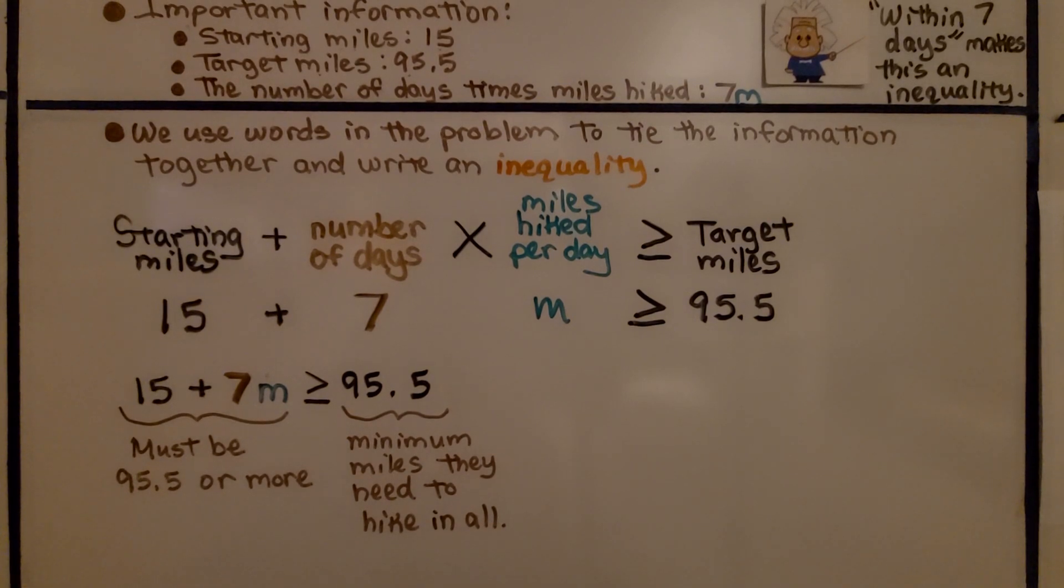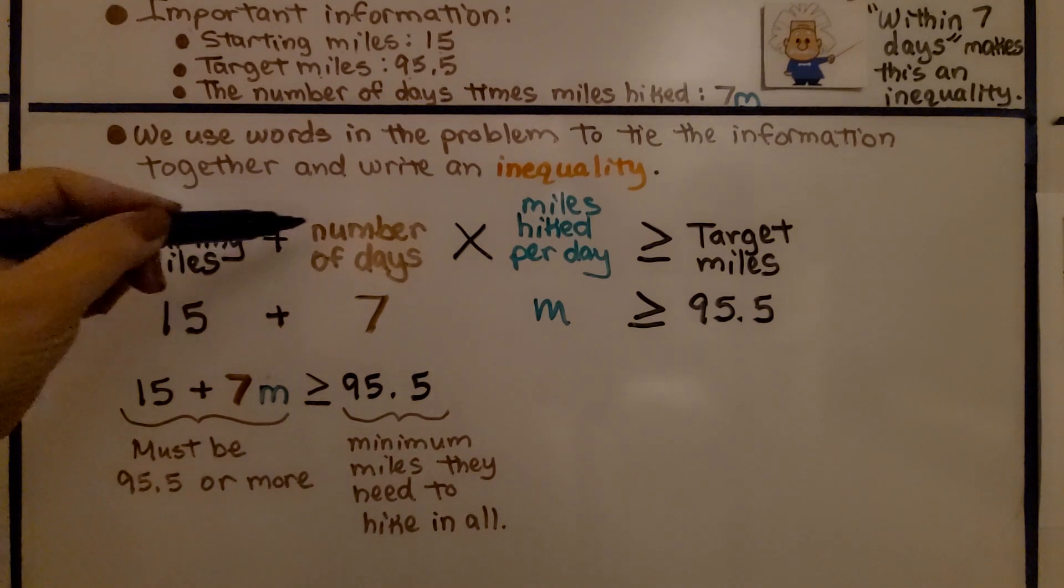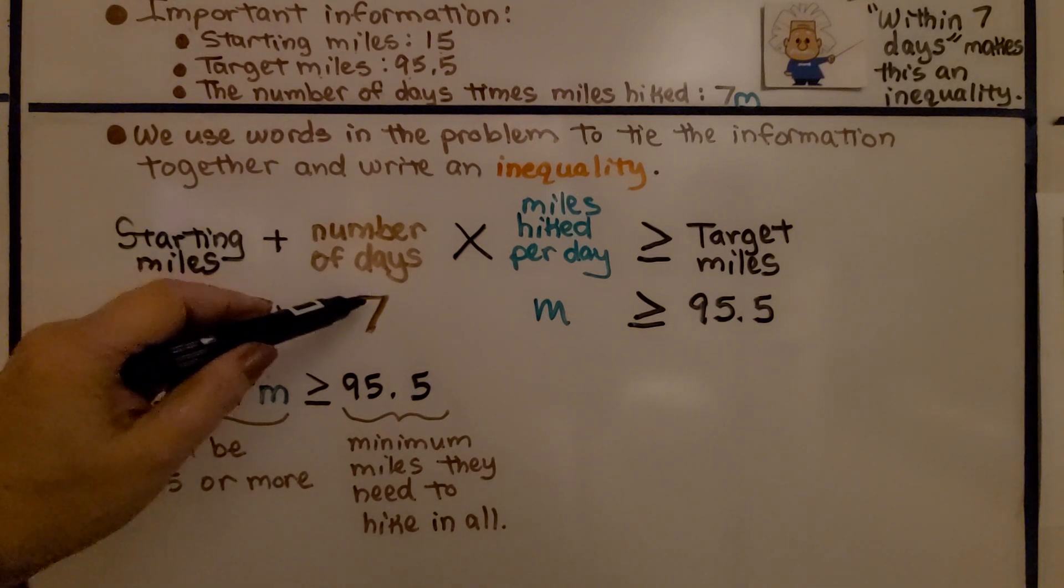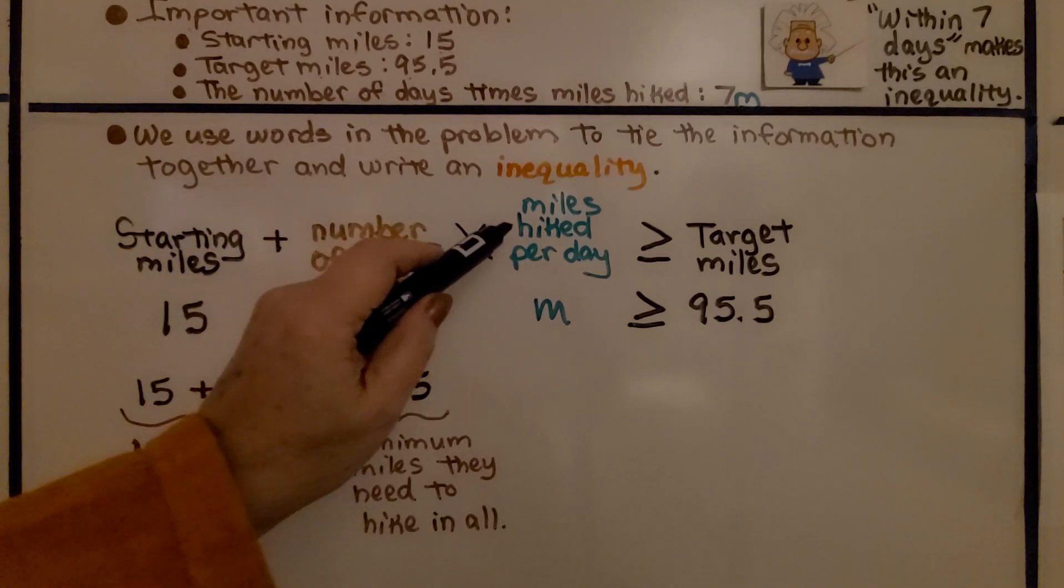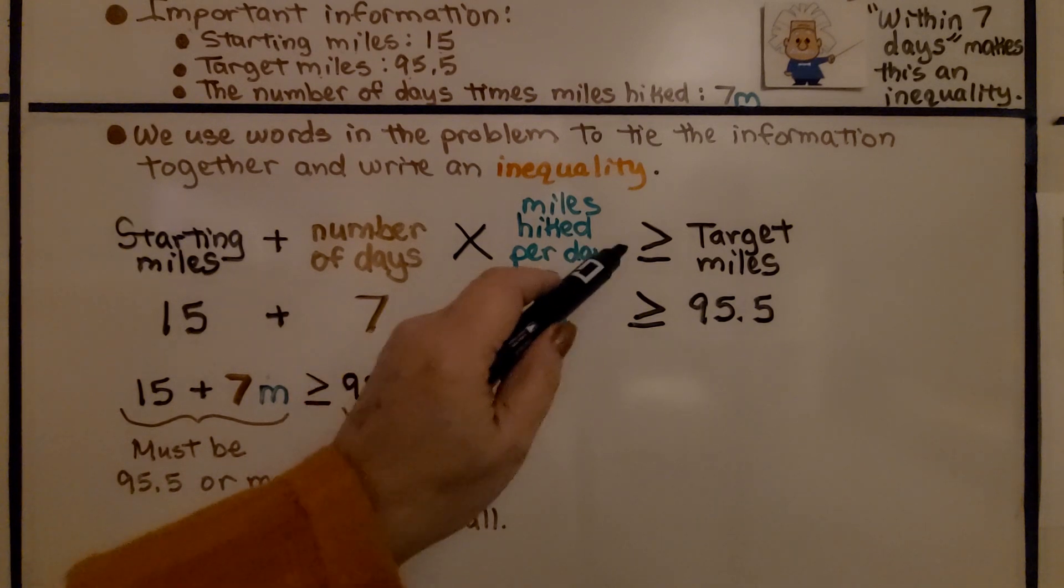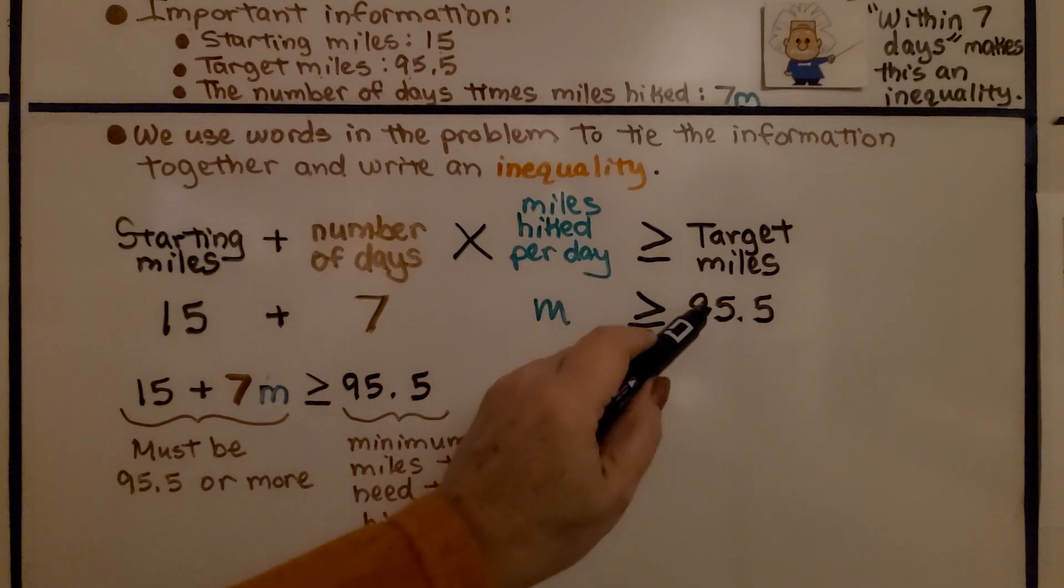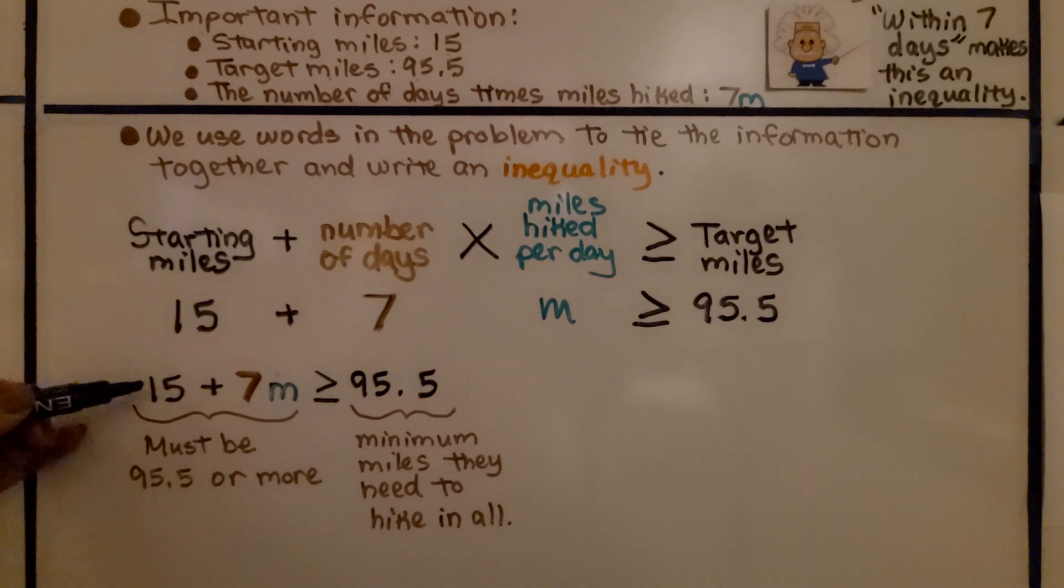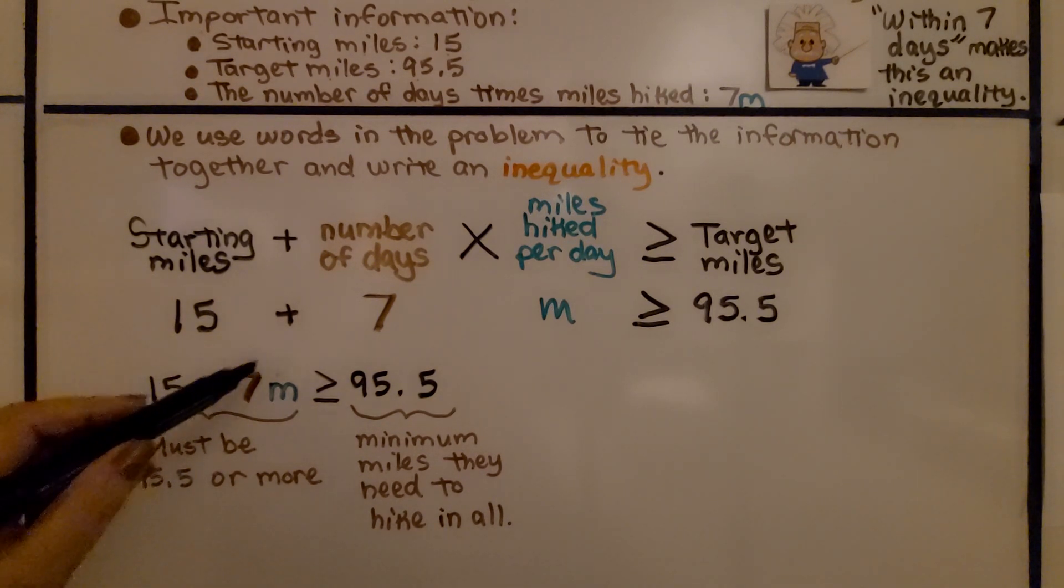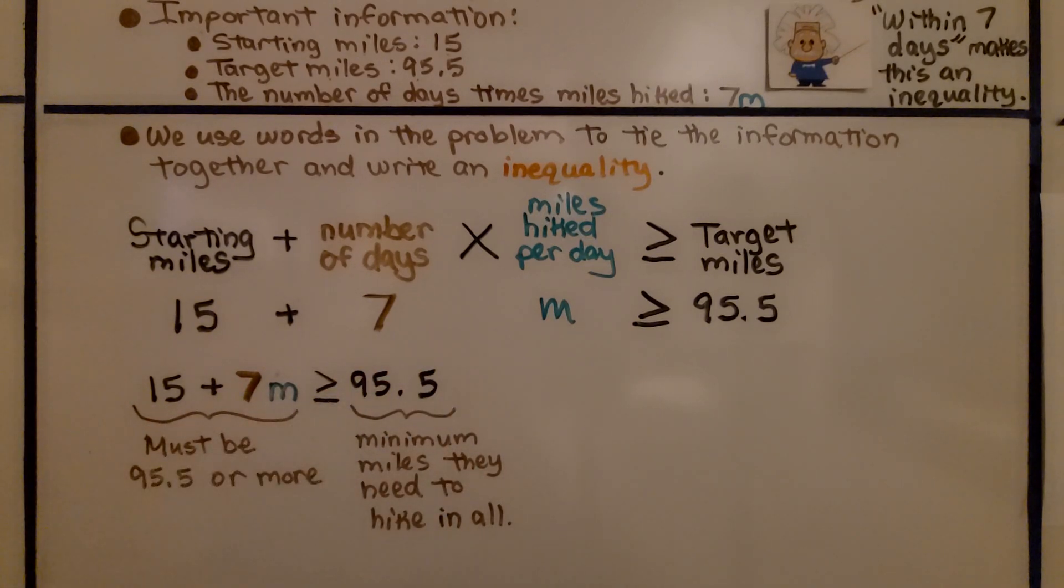We use the words in the problem to tie the information together and write an inequality. The starting miles is 15, because that's where they camped, plus the number of days, seven, that they want to complete the rest of the journey in, the hike. And that's going to be multiplied by the miles hiked per day, M. And it can be greater or equal to the target miles of 95 and 5 tenths. Our inequality is 15 plus seven for the seven days, M for the miles per day, is greater than or equal to 95 and 5 tenths.